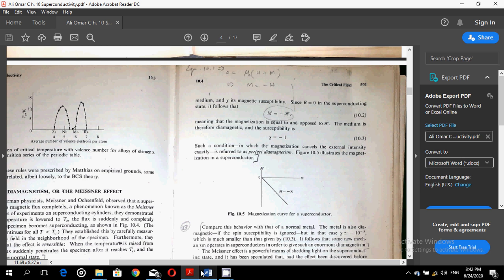So in one of my previous lectures, a student asked what is the difference between diamagnetic magnetism and perfect magnetism. So here is the answer to his question. Now, figure 10.5 illustrates the magnetization in a superconductor.